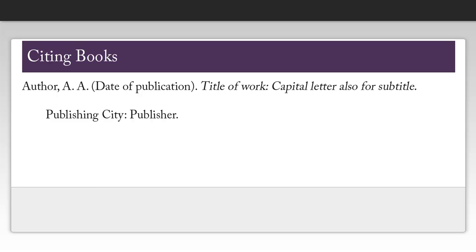When citing a book, you need to find the following information: the name of the author, the date of publication, the title of the book, the publisher, and the publishing city. One thing to note is the capitalization on the title of the book — you're only going to capitalize the first word of the title and the first word of the subtitle, as well as any proper nouns.